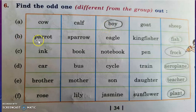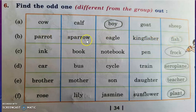Question B: Parrot, sparrow, eagle, kingfisher, fish. As you know, children, parrot, sparrow, eagle, and kingfisher are birds. Fish is an aquatic animal — it lives in water — so it is odd in this group and we have to circle it.